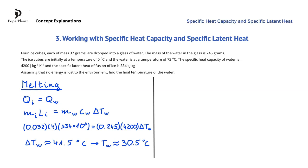Once the ice has melted, the water from the melted ice cubes is still at 0 degrees Celsius. During the second part of the process, the temperature of this water from the ice cubes will increase, and the temperature of the water originally in the glass will keep decreasing. When the water from the ice and the water originally in the glass reach the same temperature, energy transfer between them stops. This common temperature is the final temperature of the water in the glass. Let's see how to calculate this temperature.